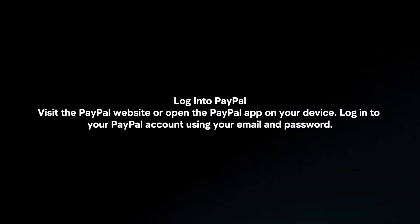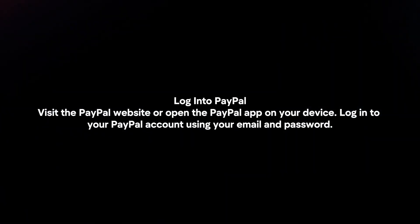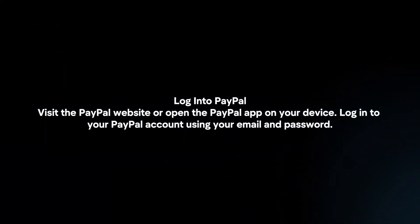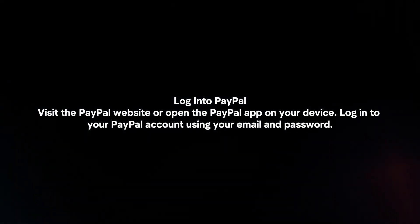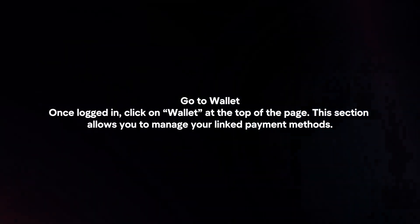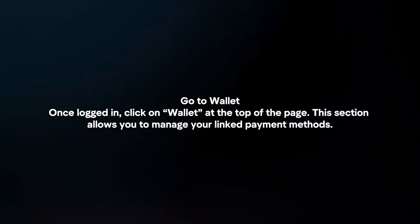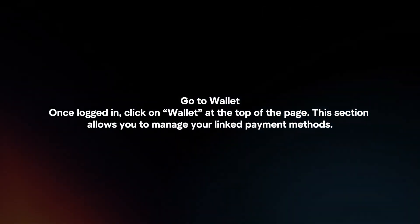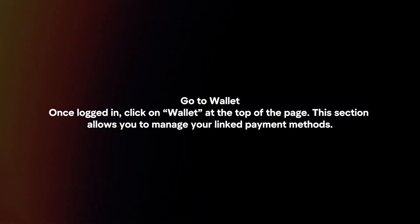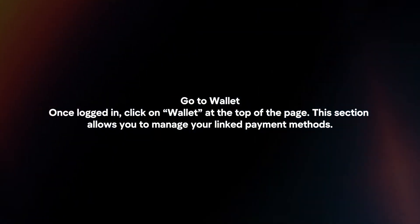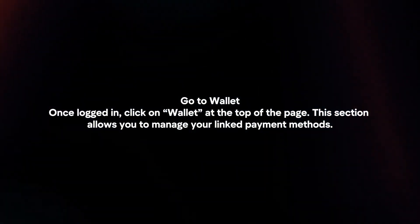Log in to PayPal. Visit the PayPal website or open the PayPal app on your device. Log in to your PayPal account using your email and password. Once logged in, go to Wallet by clicking on Wallet at the top of the page. This section allows you to manage your linked payment methods.